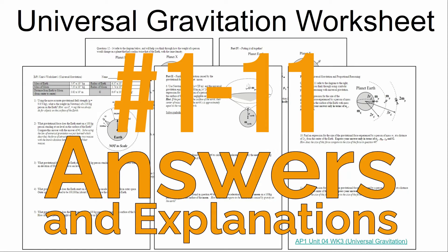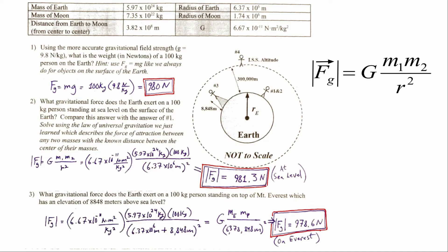In this video, I'm going to discuss answers and provide some explanations for the worksheet that you just completed on universal gravitation. If you need a copy of the worksheet, I'll post a link in the video description below. All the problems on this worksheet are getting you to practice using Newton's law of universal gravitation, which tells us the size of the gravitational attraction between any two objects with mass.